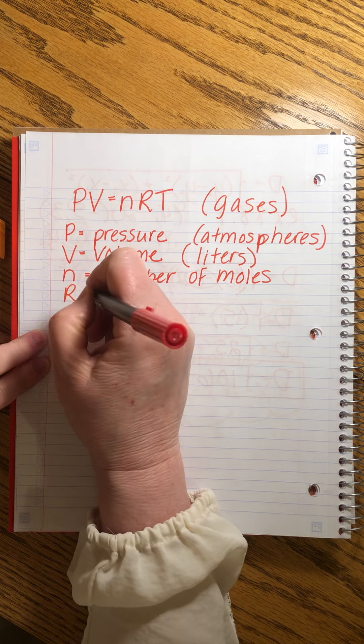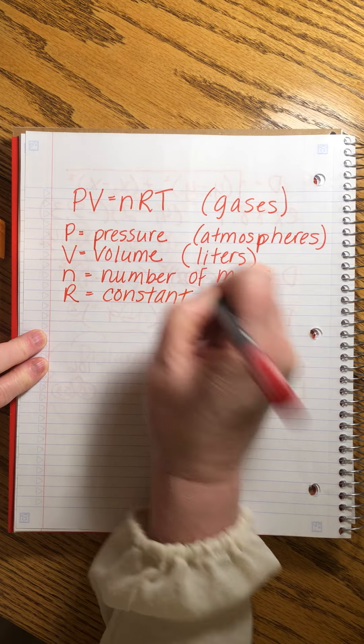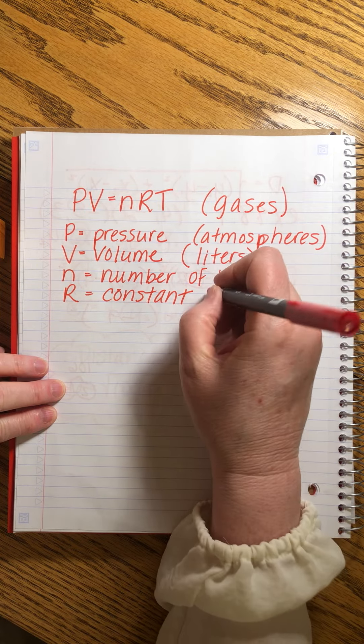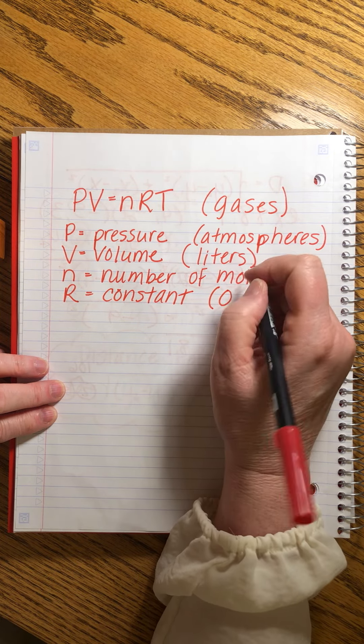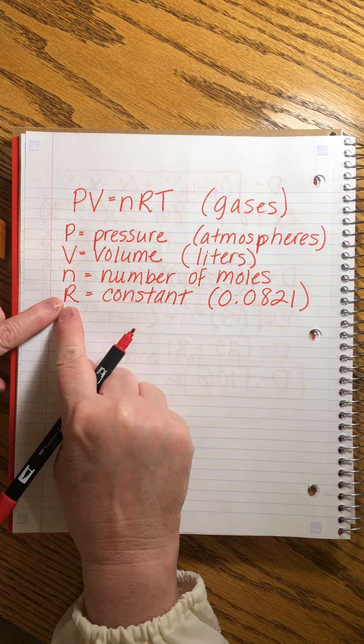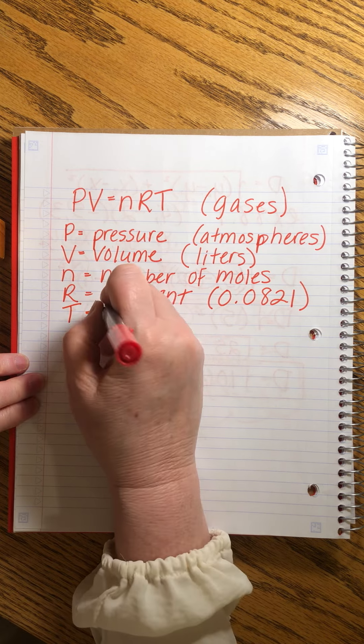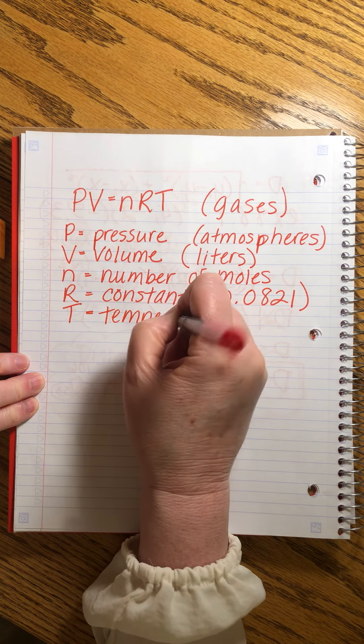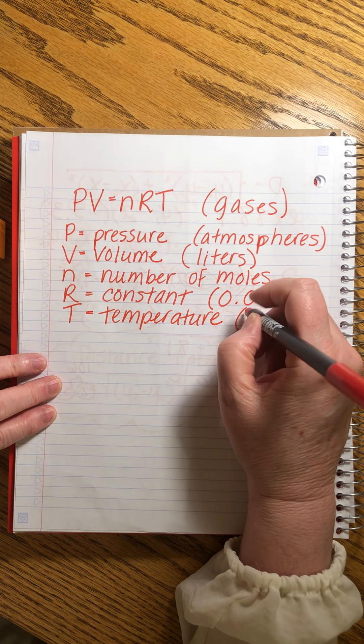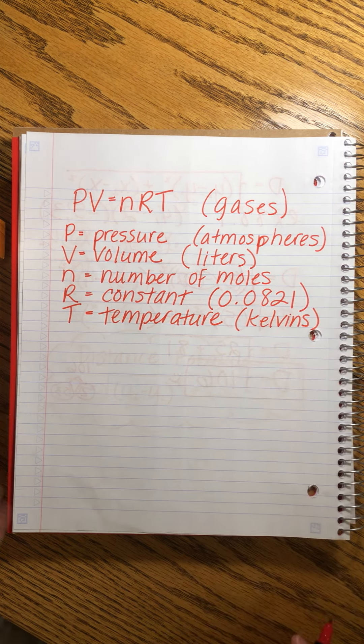R is a constant. Okay. Just as we occasionally have in types of problems, it just, it's just a number that needs to be in there to make everything come out right. And you don't have to calculate it. John will actually remind you of it. I think in just about every problem, 0.0821. Okay. He'll say R equals that. So you just plug it in. T is temperature. And that is not measured in Celsius or Fahrenheit. It's measured in Kelvins lowercase k.